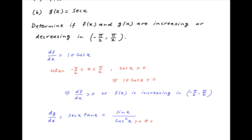Now the denominator cos²x is always positive for all values of x, and the numerator sin x is positive when x lies between 0 and π/2, and is negative when x lies in the interval minus π/2 to 0.